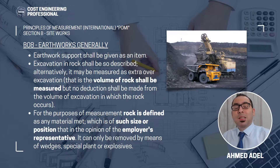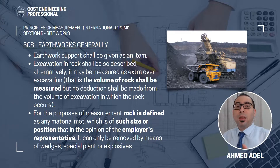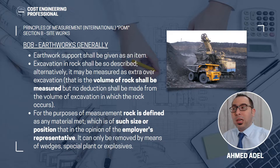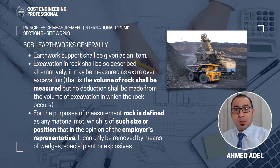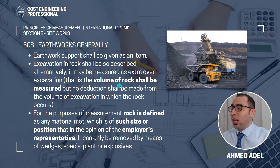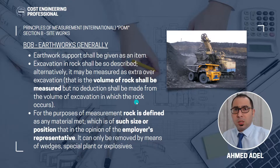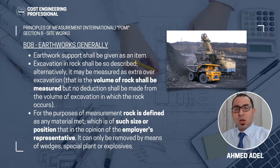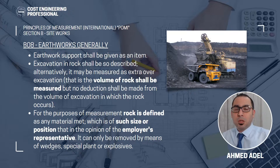If you keep excavation in rock as a separate item, you take the exact total volume in the first item called excavation in sand, which includes the full volume including rock. Then you make another item which includes the quantity of the rock only as extra over. The volume of rock shall be measured, but no deduction shall be made from the volume of excavation in which the rock occurs. So you have excavation in sand for the total quantity, and a portion of that quantity again in the excavation in rock item — as per the Principles of Measurement International.